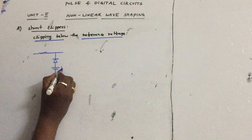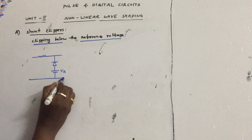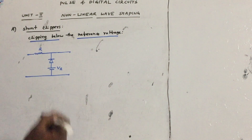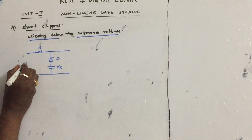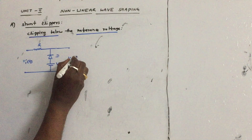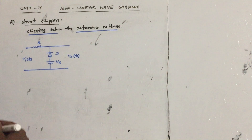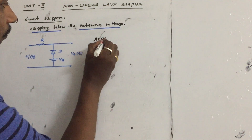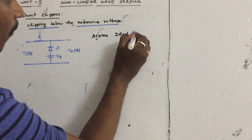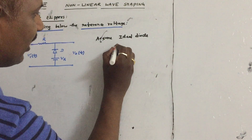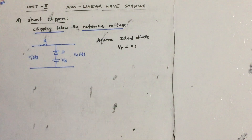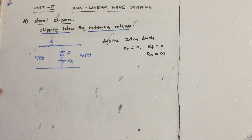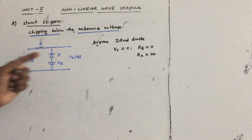This is the reference voltage Vr to the circuit, this is the resistor R, this is the input Va(t), and this is the output V0(t). We assume an ideal diode in all shunt clippers and series clippers. The cut-in voltage of the diode is 0, the forward resistance is 0, and the reverse resistance is infinity. These are the characteristics of an ideal diode.